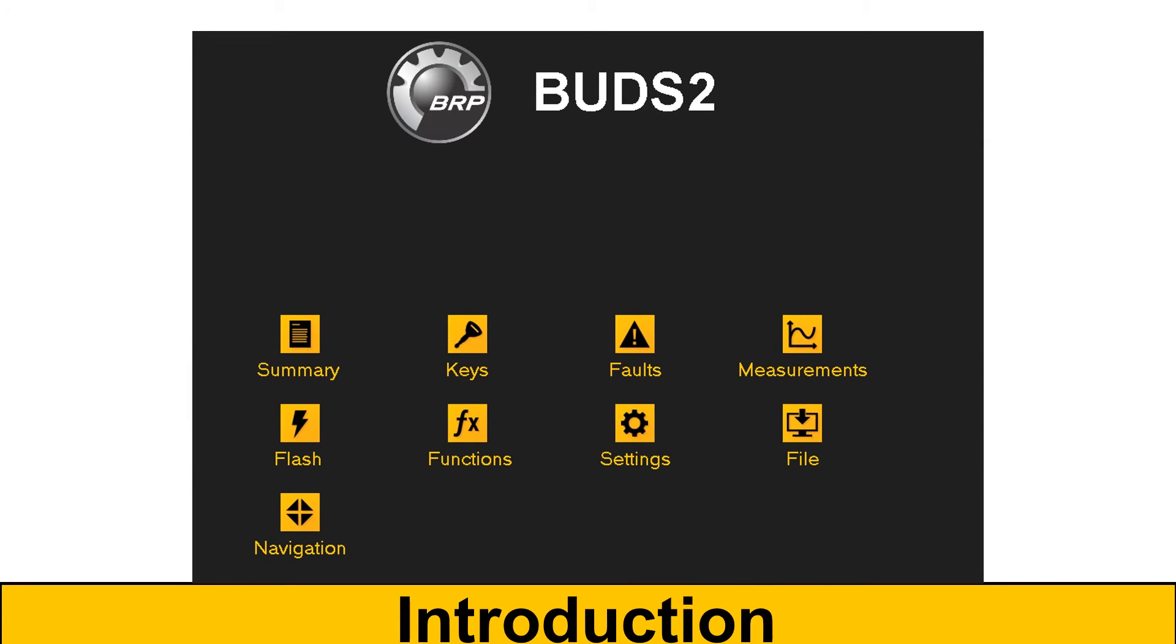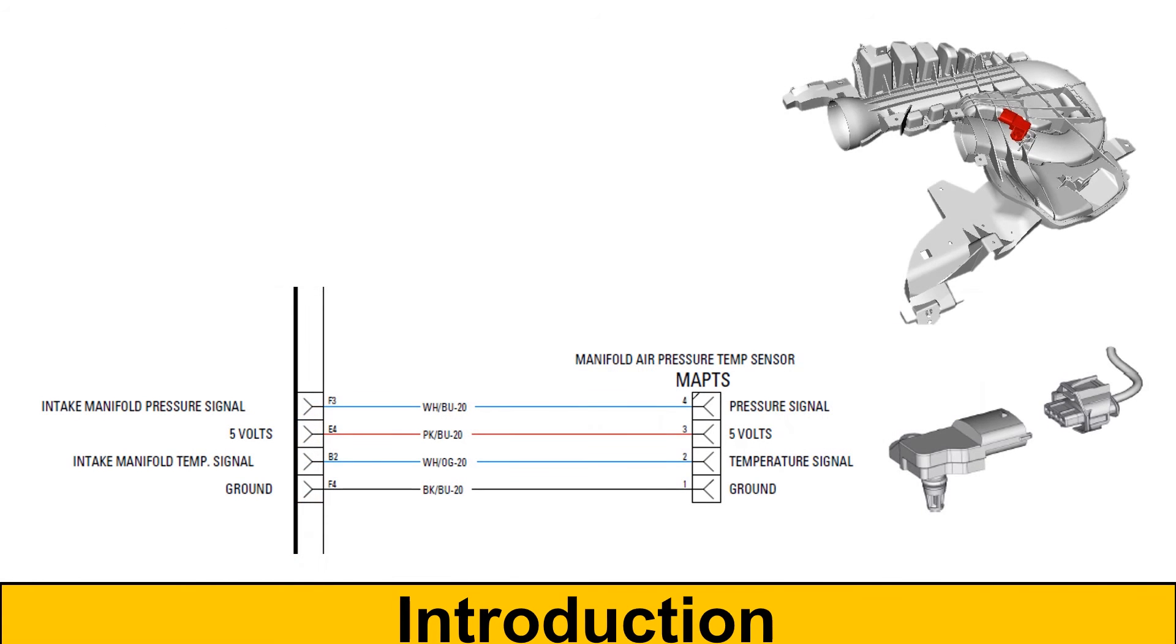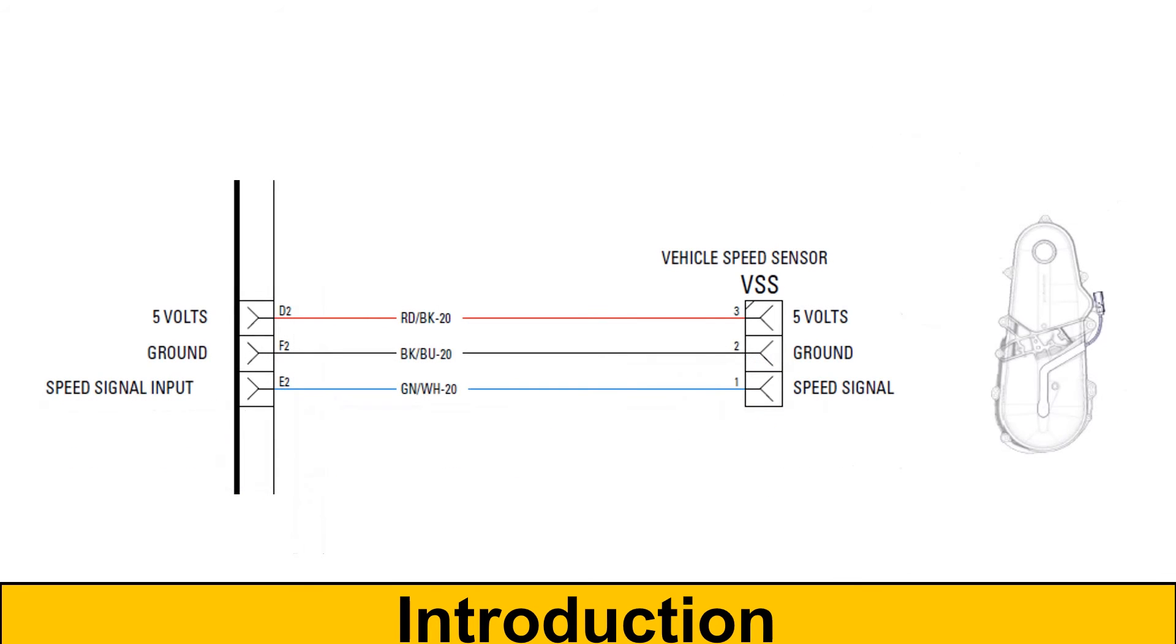It communicates via BUDS 2. There is no atmospheric pressure vent hose connection like on previous eTEC ECMs. There's a new pressure and temperature sensor on the intake silencer. The vehicle speed sensor is connected to the ECM. The ECM sends the speed signal to the cluster via CAN.